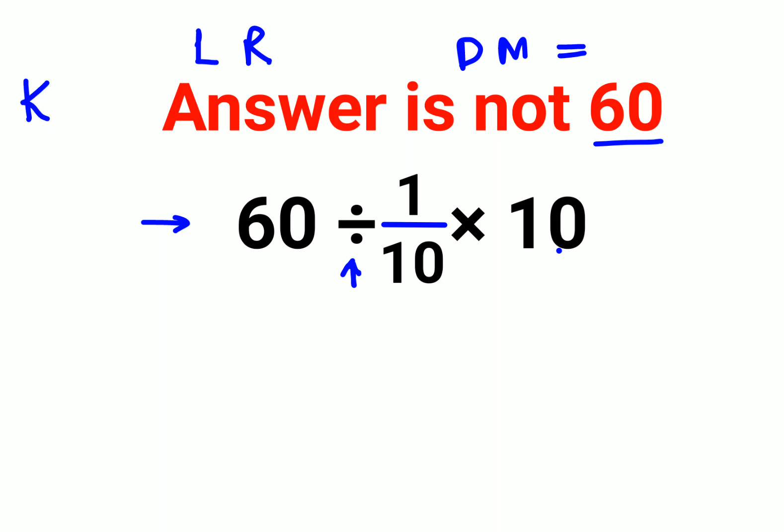Now whenever you have to do division, you will always follow the rule of KCF. In that, K stands for keeping the first number as it is, C stands for changing the division sign to multiplication, and F stands for flipping or taking reciprocal of 1 upon 10, that is 10.